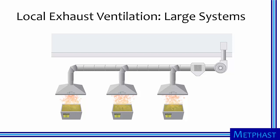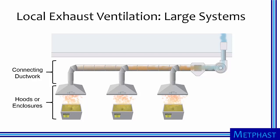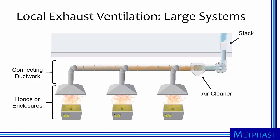In contrast, local exhaust ventilation systems evacuate contaminated air at the source. These systems can be very large, such as the multi-canopy hood system shown here. Multiple hoods or enclosures are used to evacuate contaminated air where it is produced. The contaminated air passes through connecting ductwork and an air cleaner, and is then exhausted outside the facility through a stack. We will spend most of our time today on local exhaust ventilation systems because these systems are most effective at reducing exposures in the workplace.